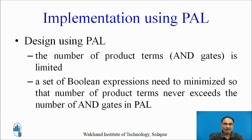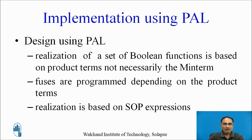How do we use PAL for implementing simple Boolean functions? As discussed, the number of product terms (AND gates) is limited — not always 2^N. A set of Boolean expressions must be minimized so that the number of product terms never exceeds the limit set by the AND gates in the PAL AND Array. Realization of Boolean functions is based on product terms, not necessarily minterms, and fuses are programmed according to these product terms. The realization is purely in SOP form.